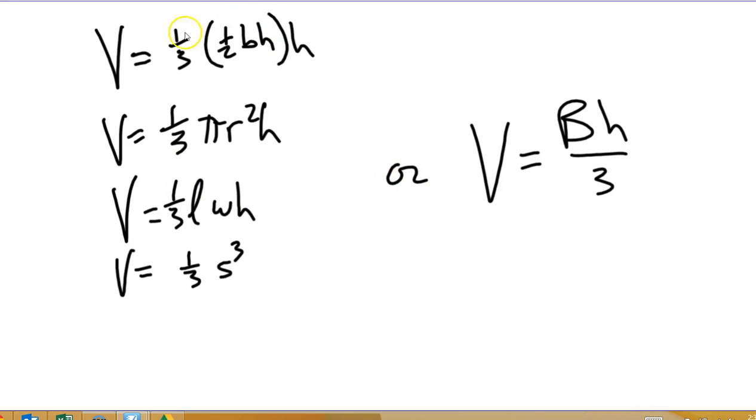All right, last thing we'll say is all of these formulas, figure out what these formulas stand for, all right? This one is volume of a, well, because it's 1 half bh times h, 1 third area of the triangle times height. This is a triangular pyramid. V equals 1 third pi r squared h. Obviously, pi r squared is a circle, so this is a cone, 1 third pi r squared h is a cone.